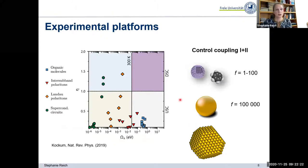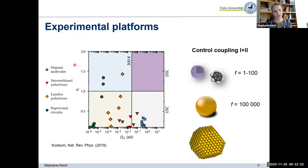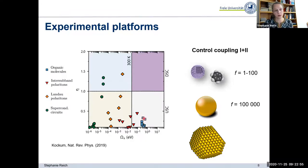Here is an overview of many different experiments that started around 2000 using different systems as platforms for achieving strong, ultra-strong, and deep-strong light-matter coupling. Early on, people focused a lot on intersubband polaritons. As a chemistry community, you're probably most interested in organic molecules — they have, on an absolute scale, a pretty high Rabi frequency on the order of 100 meV, but the reduced coupling strength (the ratio between the Rabi frequency and the bare frequency) is rather low. They reach the ultra-strong coupling regime, but don't reach the deep-strong coupling regime.